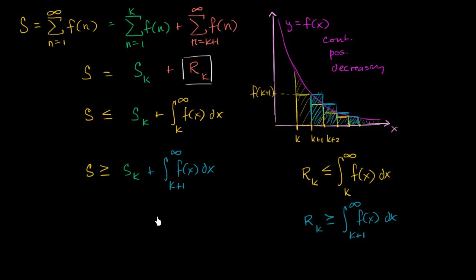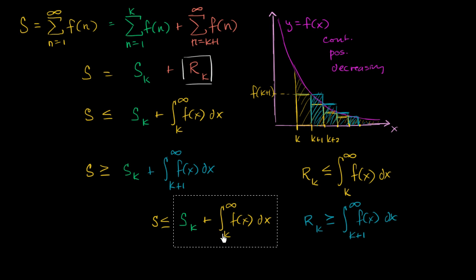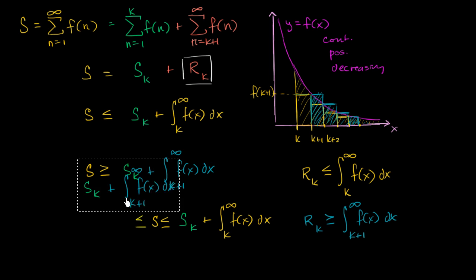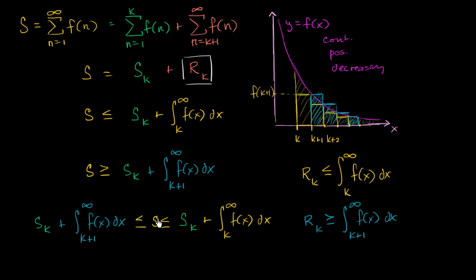Another way to write these two inequalities is as a compound inequality: s is going to be less than or equal to s sub k plus the improper integral from k to infinity of f of x dx, and s sub k plus the improper integral from k plus one to infinity of f of x dx is going to be less than or equal to s. The next series of videos will actually apply this, and we'll see that it's pretty straightforward — it just looks a little daunting right now.